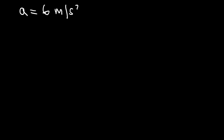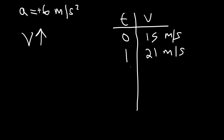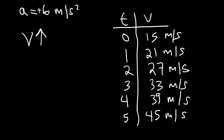To understand this: with an acceleration of 6 m/s², at t = 0 the speed is 15 m/s. One second later it's 21, then 27, then 33, then 39, and at 5 seconds it reaches 45 m/s — our final speed. When acceleration is positive, the velocity is increasing by 6 m/s every second. Think of acceleration as how fast the velocity changes every second.